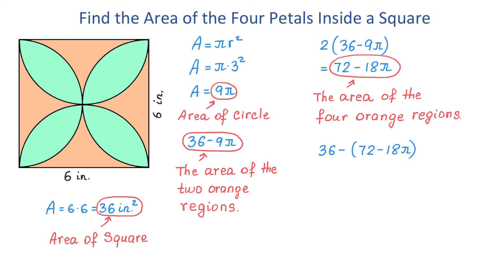Because this expression has two terms, we have to take it in parentheses. We can distribute the negative and remove the parentheses and get 36 minus 72 plus 18 pi. This equals negative 36 plus 18 pi, which is approximately 20.5 square inches. This represents the area of the four green petals.